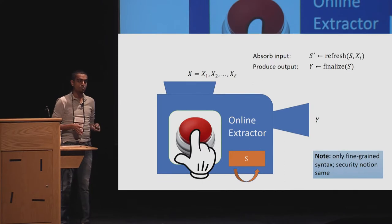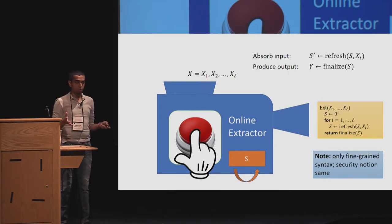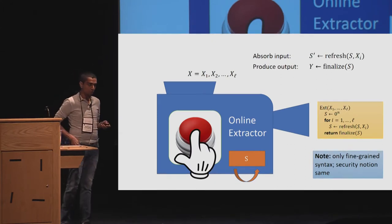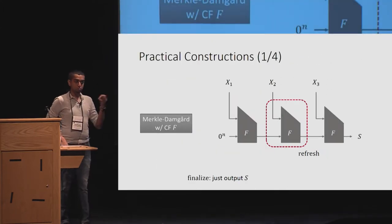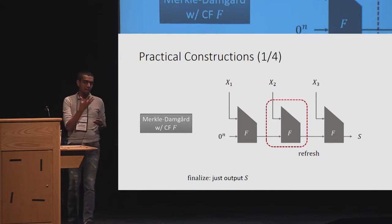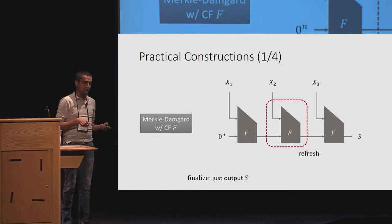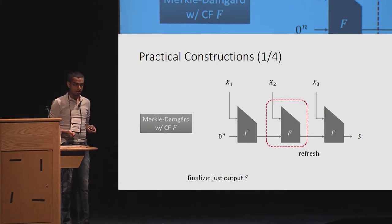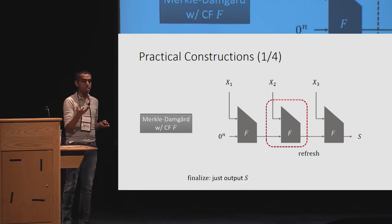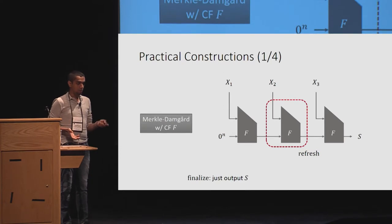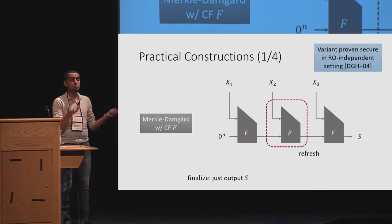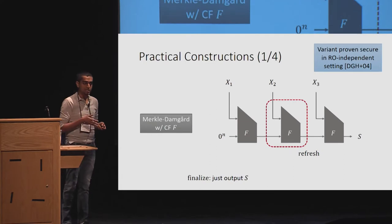Replacing it with a more robust pseudocode, as I mentioned, it iteratively absorbs and produces the output. We now propose practical constructions. The first thing, we have a Merkle-Damgard with a random compressing function f. The refresh function basically takes as input the previous state and the current input, and it produces the new state. The finalized function just outputs the state. We propose another construction. A variant of this was proven secure, but in the RO independent setting by the work of Dodis and others in 2004.